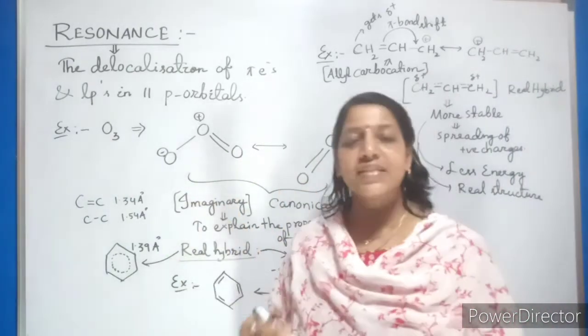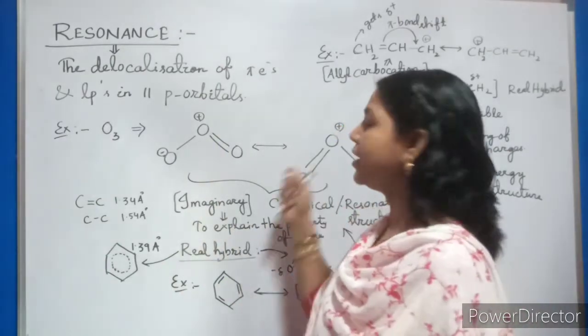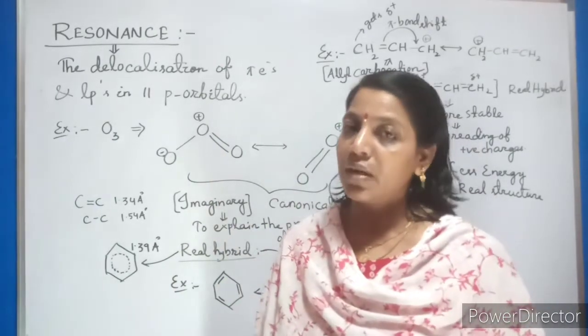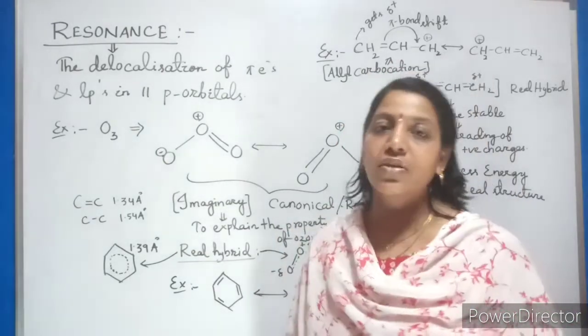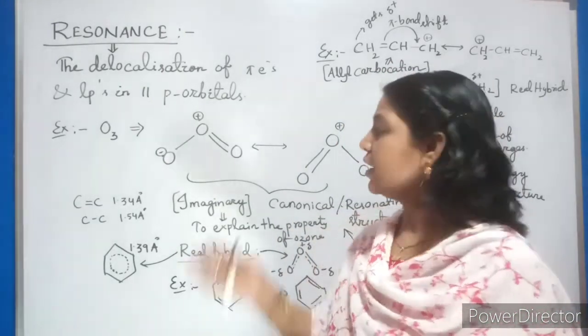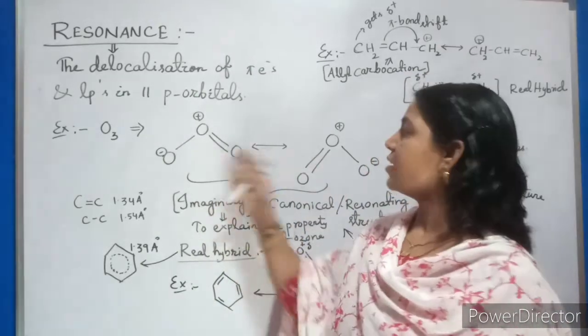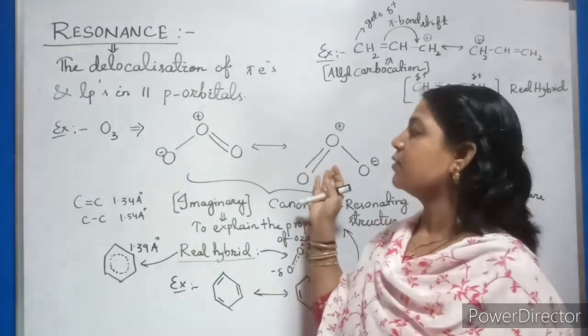If you are representing the same molecules in two different or three different ways, then that presentation or that structure is called as a resonance structure or it is also called as the canonical form. This is nothing but your resonance structure or canonical form.